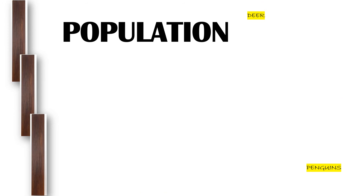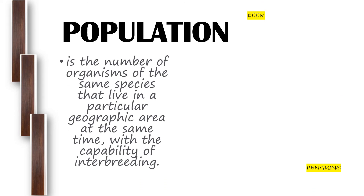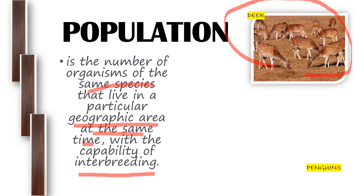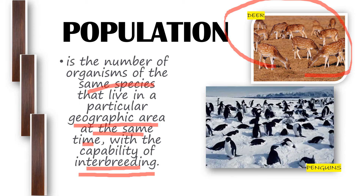Another level is population. A population is the number of organisms of the same species that live in a particular geographic area at the same time, with the capability of interbreeding. For example, a group of deer is a population — they are responsible for interbreeding, which means they can mate with each other. Another example is a group of penguins.